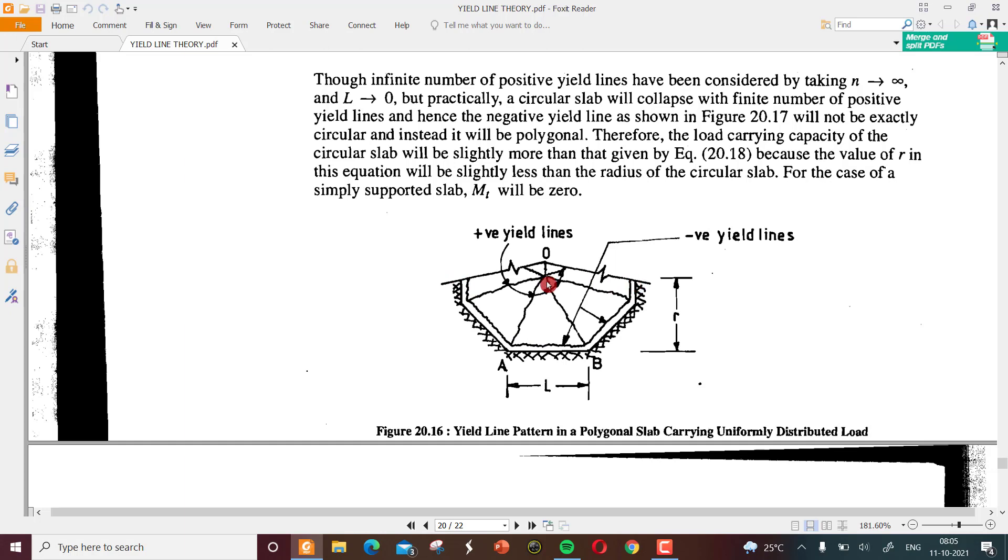If you see here, the ends are fixed support so that the negative yield line will be yielded along the fixed supports, and all the internal ones will be positive yield lines. This is a joint where all the yield lines are meeting. At this point, all the positive yield lines are meeting, so all the individual yield line values should be zero. At this point where the negative yield line and the positive yield line are meeting, the sum with sign should be equal to zero.